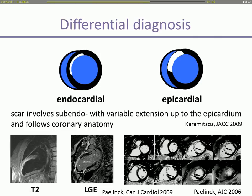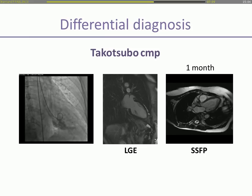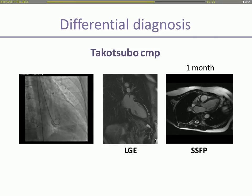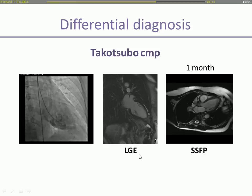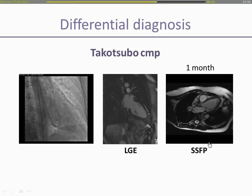It is quite easy to differentiate ischemic heart disease — myocardial infarction — from other non-ischemic causes of heart failure using late gadolinium enhancement. If you have ischemic heart disease, the late gadolinium enhancement zone typically involves the subendocardium and extends up to the epicardium, following the coronary anatomy. In Takotsubo cardiomyopathy, another cause of acute heart failure and chest pain, CMR with late gadolinium enhancement will show no enhancement, which predicts recovery of LV function after several weeks.